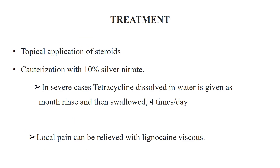The etiology of aphthous ulcers is unknown but may be an autoimmune process, nutritional deficiency, viral or bacterial infection, food allergies, or hormonal changes and stress. Aphthous ulcers can be differentiated from viral ulcers by their frequent recurrence, involvement of movable mucosa on the soft palate or cheek, and absence of constitutional symptoms like fever, malaise, and enlarged cervical nodes. Treatment consists of topical steroids and cauterization with 10% silver nitrate. In severe cases, 250 mg of tetracycline dissolved in 50 ml of water is given as a mouthwash four times a day. Local pain can be relieved with lignocaine viscous or ointments.